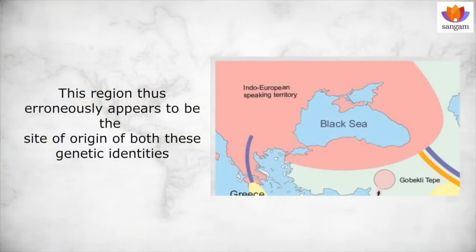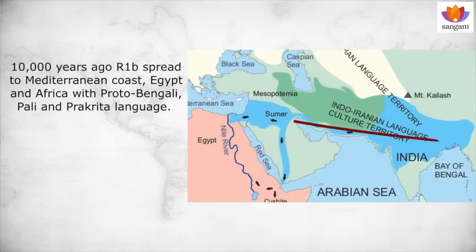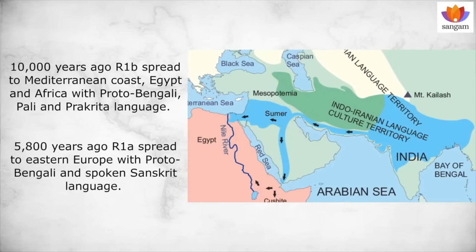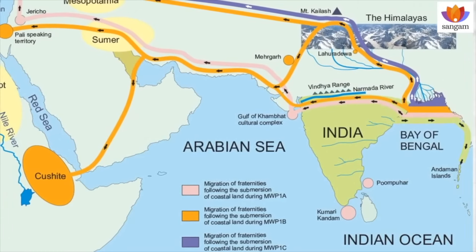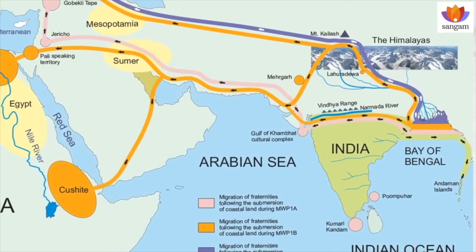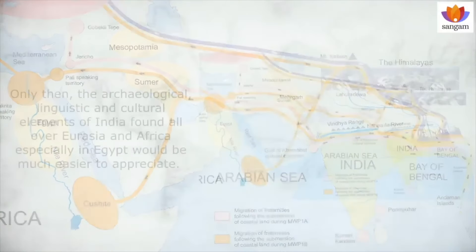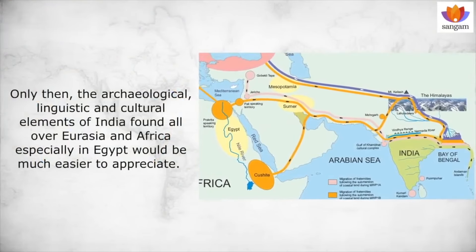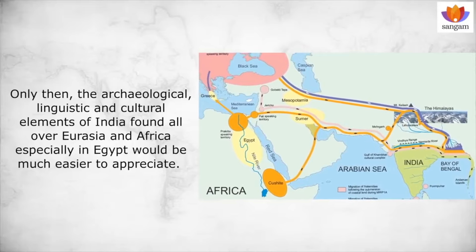Both the R1-alpha and R1-Bravo haplogroups from India entered Europe through the European steppe and Anatolia or modern-day Turkey, and hence this region possesses the oldest divisions of both these genetic identities found within Europe. This region thus erroneously appears to be the site of origin of both these genetic identities. 10,000 years ago R1-Bravo spread to the Mediterranean coast, Egypt, and Africa with Pali and Prakrit languages. On the other hand, 5,800 years ago R1-alpha spread to Eastern Europe with spoken Sanskrit language. It is important that we understand that both R1-alpha and R1-Bravo haplogroups in Y chromosome originated on the east coast of India, and from there they spread along with their language and cultural characteristics. Only then the archaeological, linguistic, and cultural elements of India found all over Eurasia and Africa, especially in Egypt, would be much easier to appreciate.